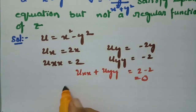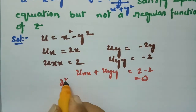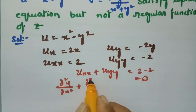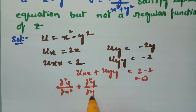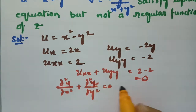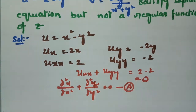Therefore, ∂²u/∂x² + ∂²u/∂y² = 0. So u satisfies the Laplace equation. This is equation number (a).